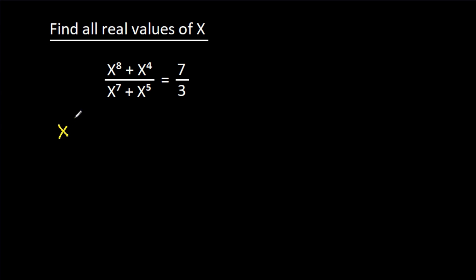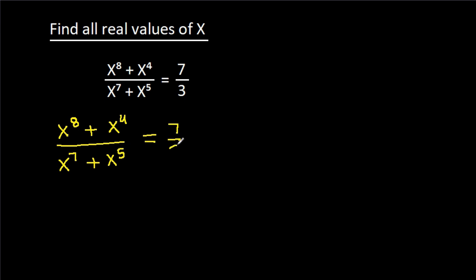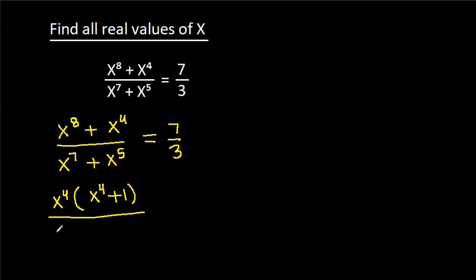We have (x⁸ - x⁴)/(x⁷ - x⁵) = 7/3. In the numerator, we can take x⁴ common, giving x⁴(x⁴ - 1). In the denominator, we can also take x⁴ common, giving x⁴(x³ - x). This equals 7/3.